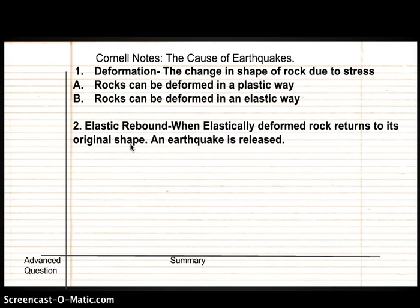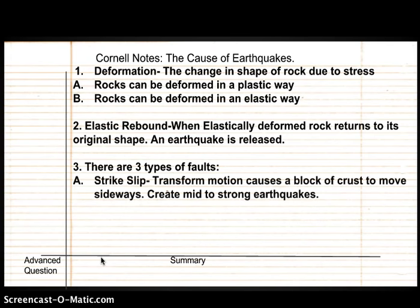There are three types of earthquake faults. Remember, a fault is a break in the tectonic plate. It could be small or big, usually smaller than a tectonic boundary. The first type is a strike-slip fault. A strike-slip fault is when transform motion causes a block of crust to move sideways. It creates middle to strong earthquakes.